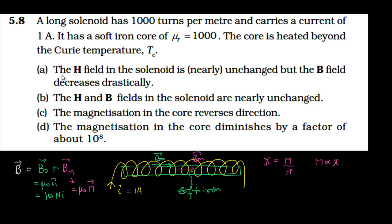First, Option A says: the H field in the solenoid is nearly unchanged, but the magnetic field B decreases drastically. We are asking about the situation when the core is heated beyond the Curie temperature. Heating the core has no effect on H, because H is current-dependent. We assume the coil itself is not heated enough to change its resistance. So H is unchanged.